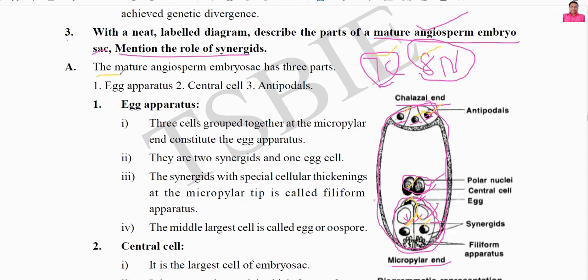The mature angiospermic embryo sac, or female gametophyte, has three parts: number one is the egg apparatus, number two is the central cell, and number three is the antipodals.